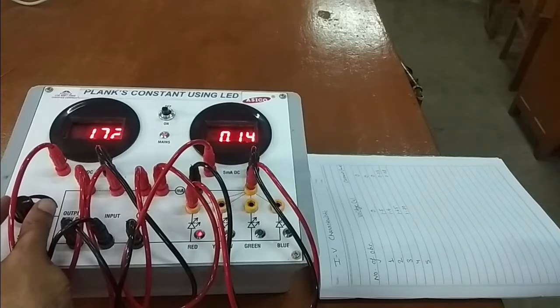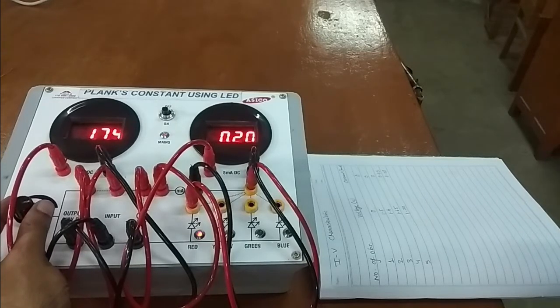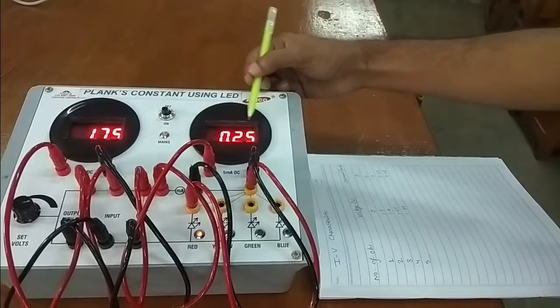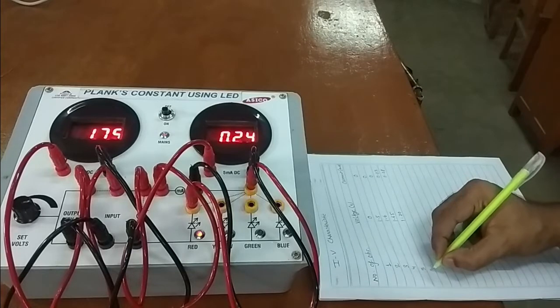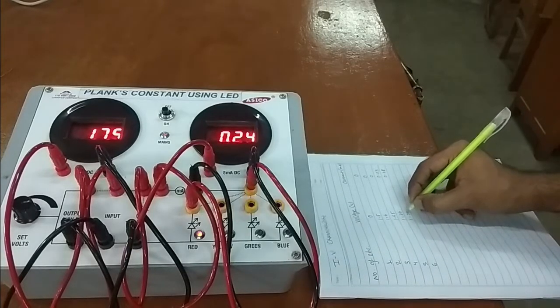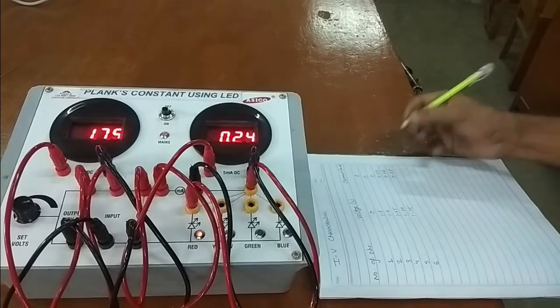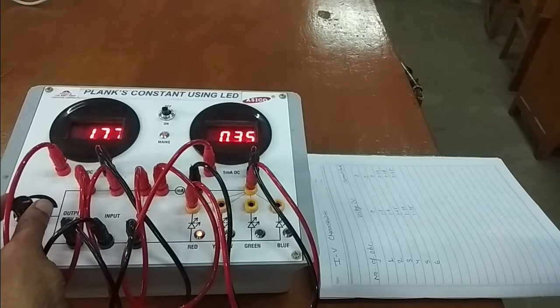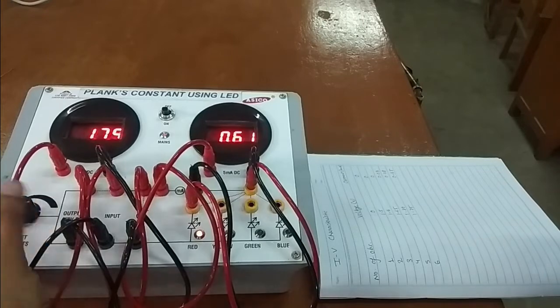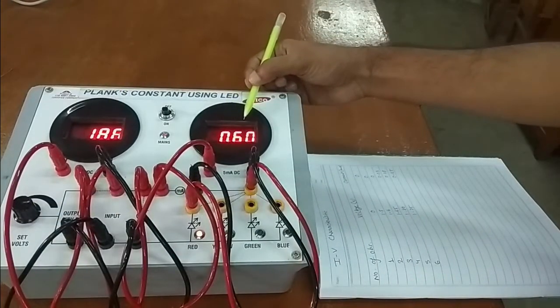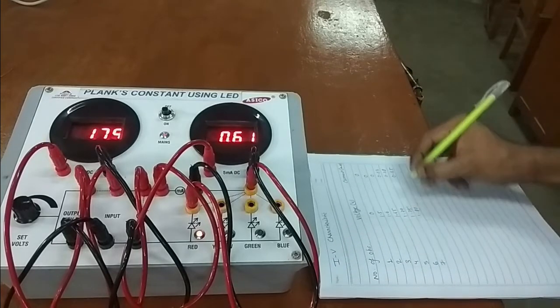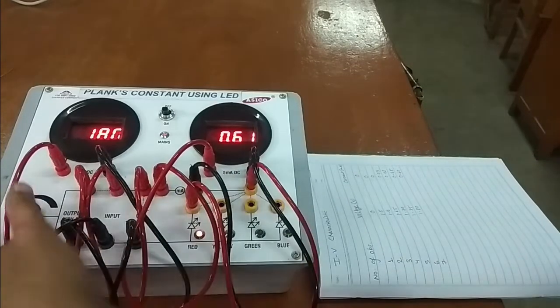Let's increase the voltage further to 1.75 and note it down. Voltage is 1.75, current is 0.05, observation number 6. Similarly, from now onward we will increase our voltage in the steps of 0.05 and we will note down the current. Right now the voltage is 1.8 and corresponding current is 0.6. Observation number 7, 1.80, current is 0.60. Make it 1.85.